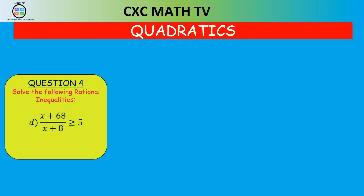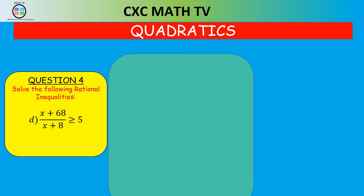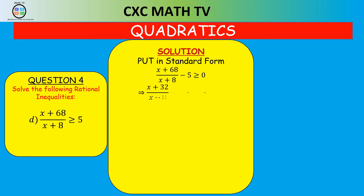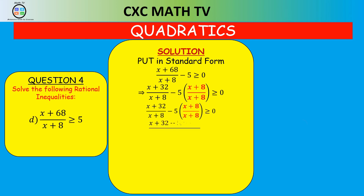One final question: X plus 68 over X plus eight, greater than or equal to five. First put it in standard form by subtracting five from both sides, then write as one fraction. This simplifies to X plus 68 minus 5X minus 40, over X plus eight, which becomes negative 8 minus 4X over X plus eight, greater than or equal to zero. Multiplying through by X plus eight all squared gives negative 8 minus 4X times X plus eight, greater than or equal to zero.